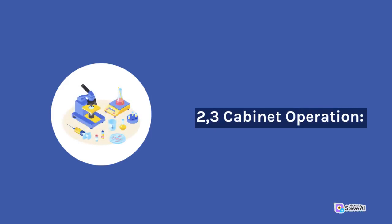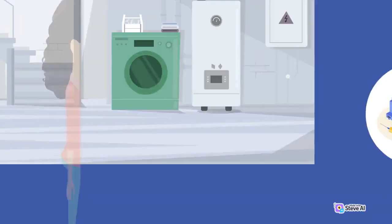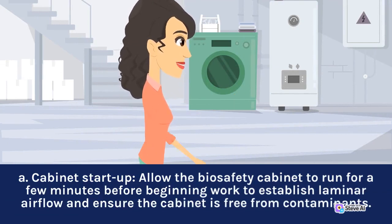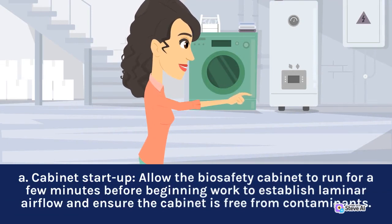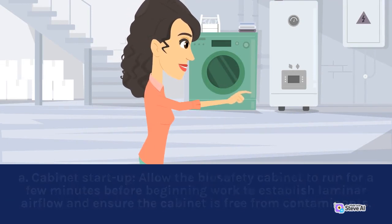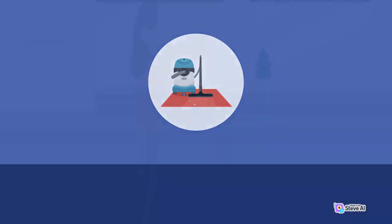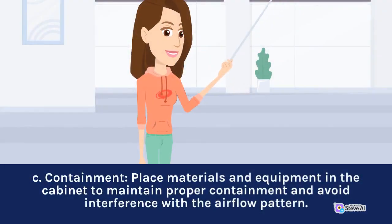Cabinet Operation. A. Cabinet Startup: Allow the biosafety cabinet to run for a few minutes before beginning work to establish laminar airflow and ensure the cabinet is free from contaminants. B. Avoid Blocking Vents: Keep the vents and grills of the biosafety cabinet clear of any obstruction, as this can disrupt proper airflow. C. Containment: Place materials and equipment in the cabinet to maintain proper containment and avoid interference with the airflow pattern.